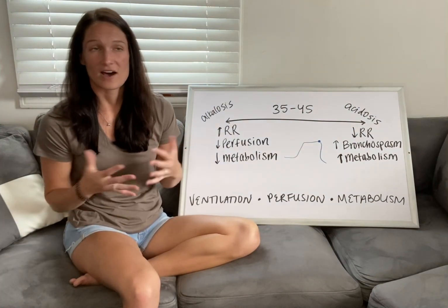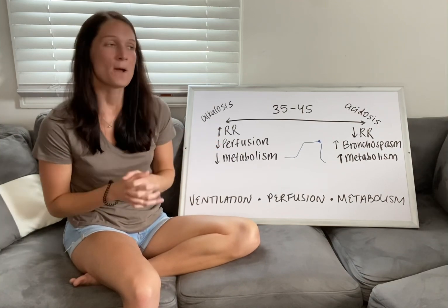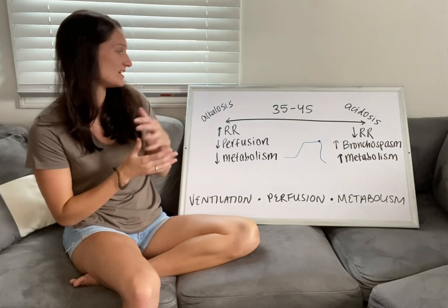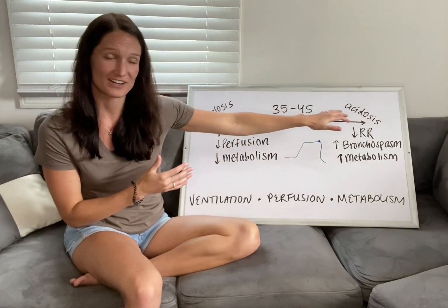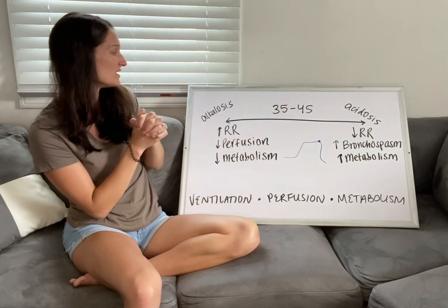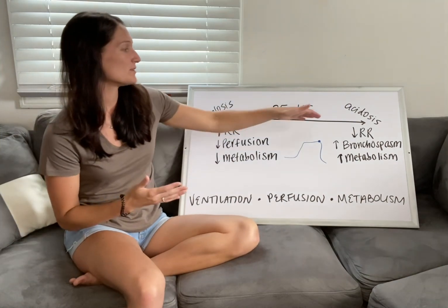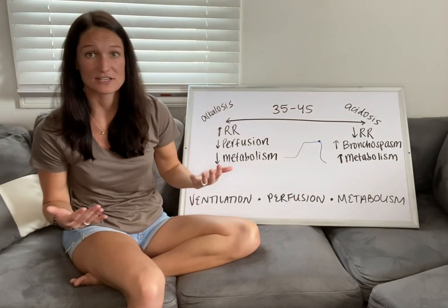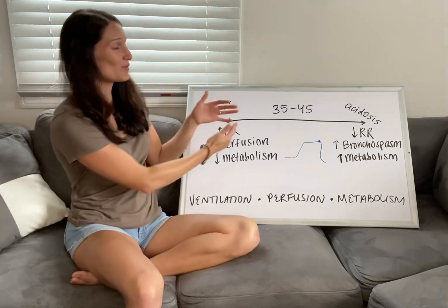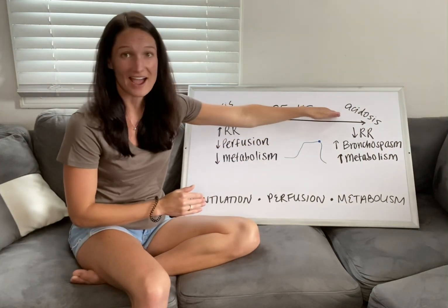For the purposes of simplicity, think of carbon dioxide as an acid — that's oversimplified, but it really helps us figure out if our patient is in a respiratory alkalosis or respiratory acidosis. Our normal values for end tidal are 35 to 45. If our values are lower than that, we may consider our patient to be in a respiratory alkalosis. If our numbers are higher, we may consider them to be in an acidosis — because if CO2 is equated to an acid, less acid means more alkalotic, more acid means more acidotic.